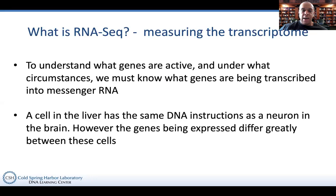To bring it to a higher-level concept: a liver cell has the exact same DNA instructions as a neuron in the brain. The difference between those cells is really the expression of those genes, which varies greatly. In the liver, liver-specific programs of development and metabolism are only active in the liver and not so much in the neuron, and vice versa.